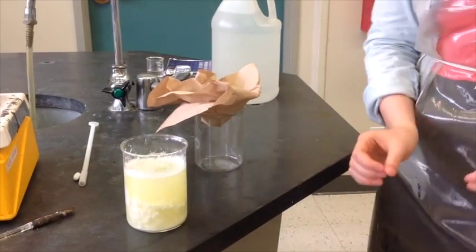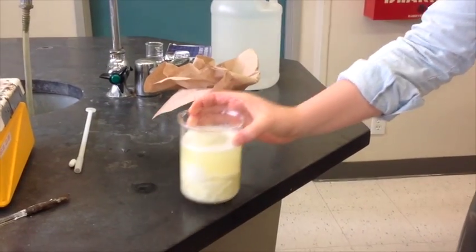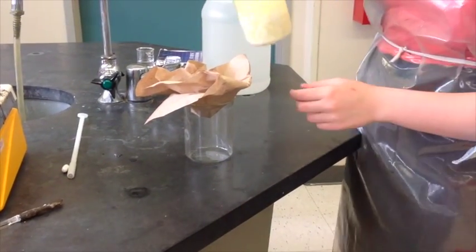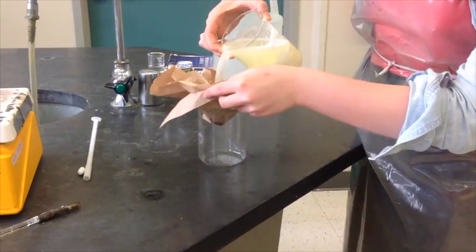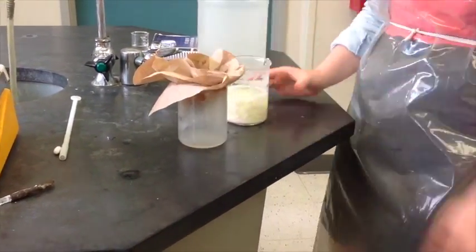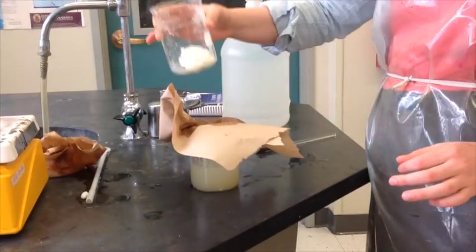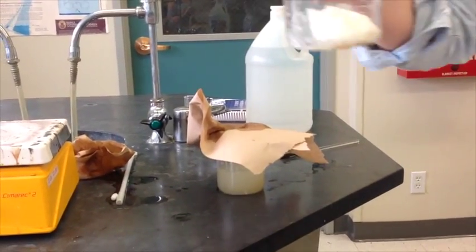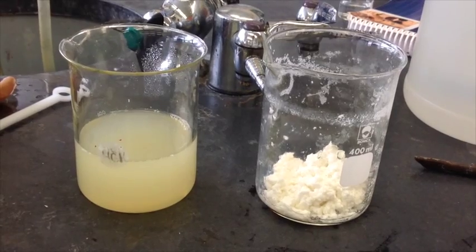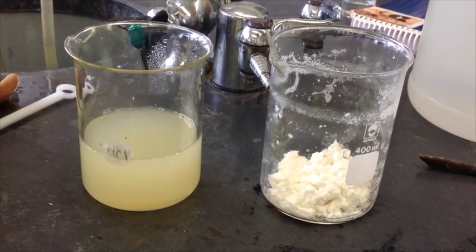Step 3: Now that you have extracted casein from milk, we are now going to drain out the excess of non-protein milk using a paper towel and a beaker. On the right is the casein, on the left is the liquid leftover from the milk.